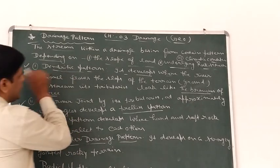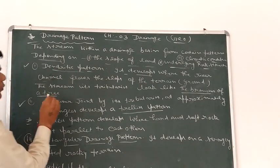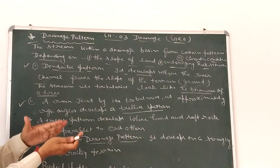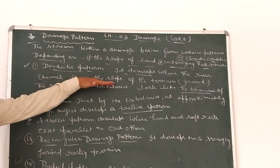Let's continue with dendritic pattern. It develops where the river flows on the slope of the land. When the river flows on the slope of the terrain, this pattern develops.